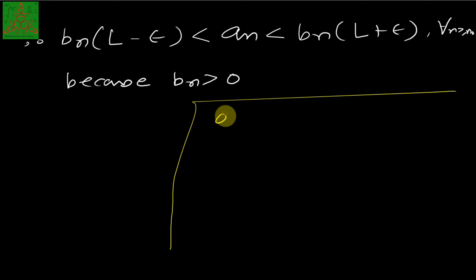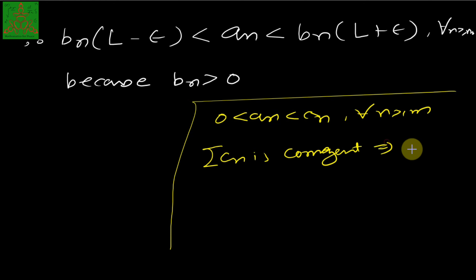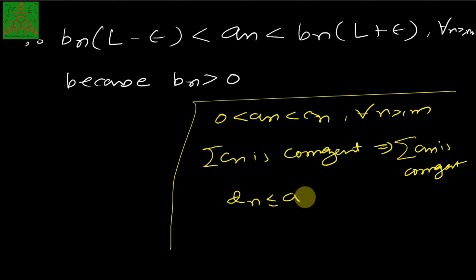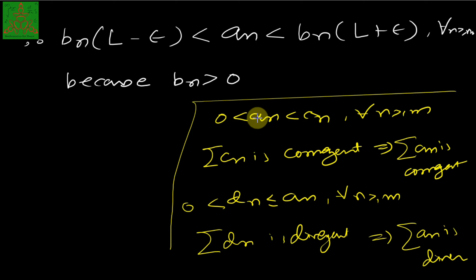The comparison test says: if An and Cn are two sequences such that An ≤ Cn, and if Cn is convergent, then An is also convergent. And if Dn ≤ An for every n greater than or equal to m, and if Dn is divergent, then An is also divergent. In summary: if the bigger series is convergent, then the smaller one is also convergent; and if the smaller one is divergent, then the bigger one is divergent.